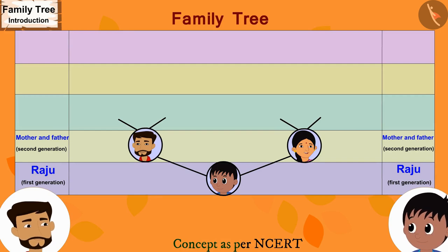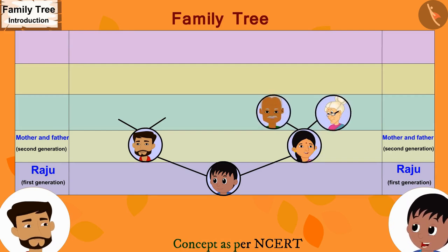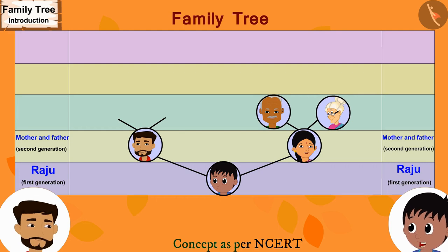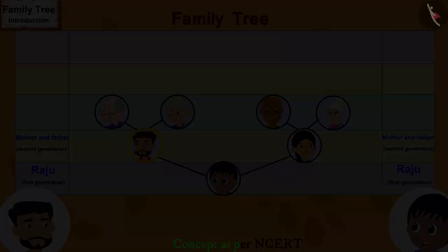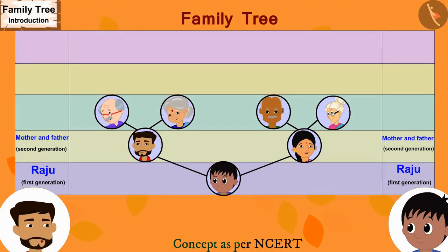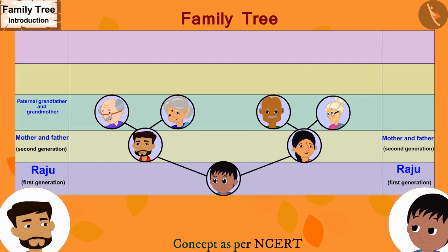Raju explains that you have to write maternal grandfather and grandmother's names on the two lines above mother's name, and on the two lines above father's name you will write paternal grandfather and grandmother's names. His father confirms that Raju is correct and writes the names of the paternal grandfather and grandmother and the maternal grandfather and grandmother, completing the third generation.